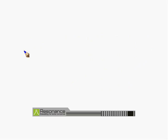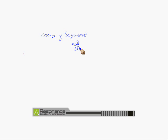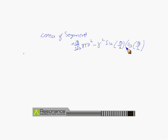Therefore, the area of the segment equals the area of the sector minus the area of triangle OAB. That is: theta upon 360 into pi R squared minus R squared sine theta by 2 into cos theta by 2. This is the complete formula for the area of a segment of a circle.